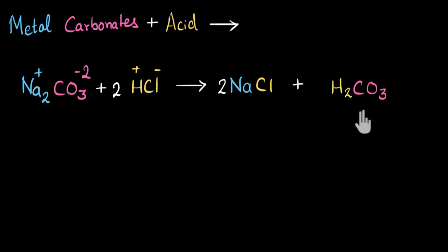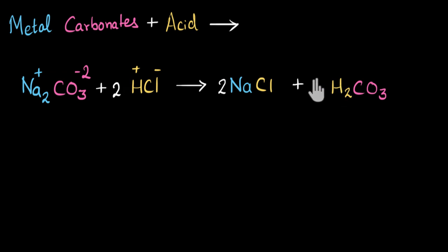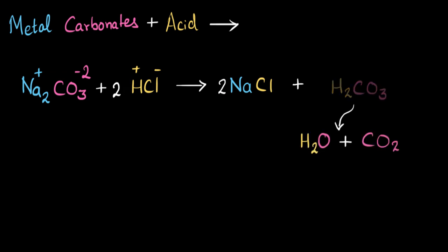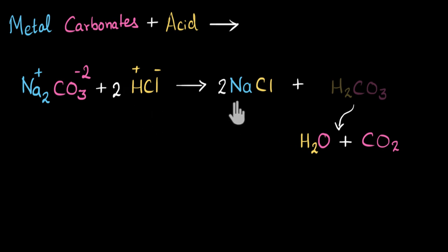You might be wondering: carbon dioxide should be formed, but there is no carbon dioxide on the product side — so what is happening? H₂CO₃ is not very stable. It is going to further decompose into water and carbon dioxide, and this is the carbon dioxide gas that gets released. So we can say that a metal carbonate reacts with an acid to give us salt — NaCl is a salt — water, and carbon dioxide gas is released.